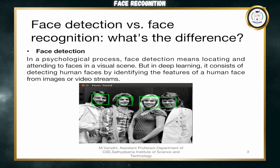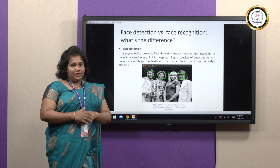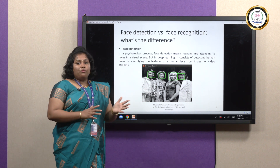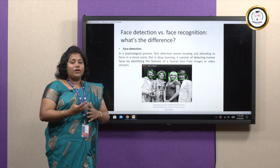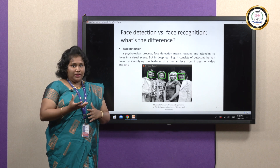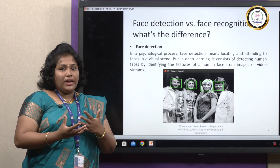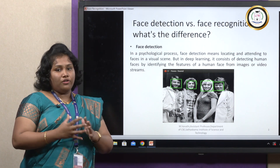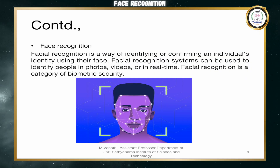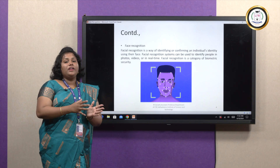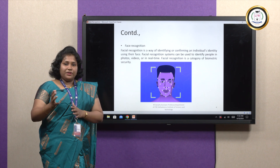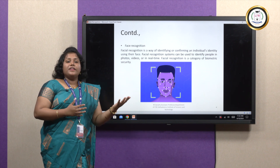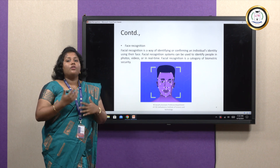First, you have to know what is meant by face detection and how face detection and face recognition differ. Face detection is where we are going to locate or identify the face of an individual. After locating or identifying the face, we are going to build a bounding box around the face. Next, we move to face recognition, which is confirming whether those bounded faces match a person's face or not, by using already stored images, videos, or real-time data.